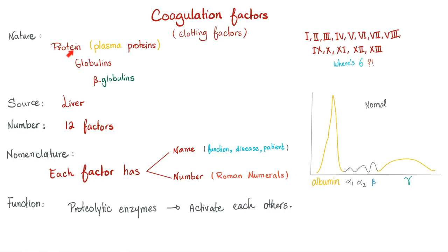Coagulation factors — are they proteins, fats, or carbohydrates? They are proteins, specifically plasma proteins. Are they albumin or globulins? They are globulins — specifically beta globulins. Their source is the liver. All of them, except calcium which is factor 4 — factor 4 is ionized calcium and does not come from the liver. Nomenclature: each factor has a name and a number. The name denotes function or disease. There is no such thing as factor 6 — only factor 6 doesn't exist; factors 3 and 4 do exist.